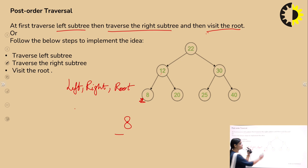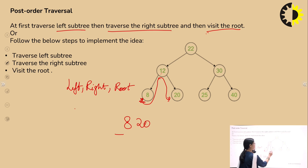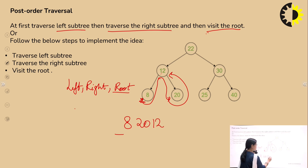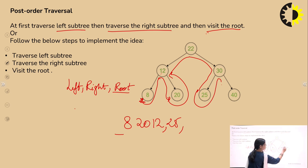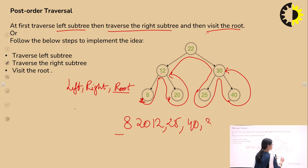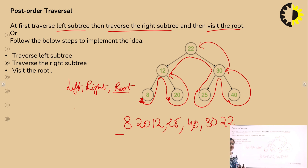Continuing postorder traversal: after 8, we traverse to the right node, which is 20, then the root of that subtree, which is 12. Then we write 25 as the left child of 30, then 40 as the right child of 30, then the root 30, and finally the overall root, which is 22. If you match this with the given answer, it is correct.